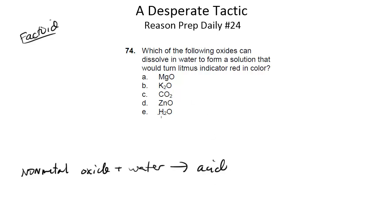So which one is the only non-metal oxide here? Well, it's actually, there's two. It's C and E, CO2 and H2O. But you can't dissolve water into water and get an acid. That just doesn't make any sense. So you can get rid of E safely there.